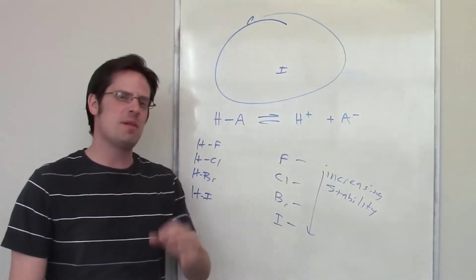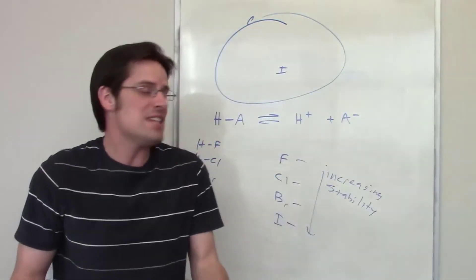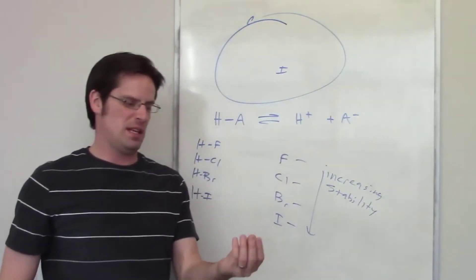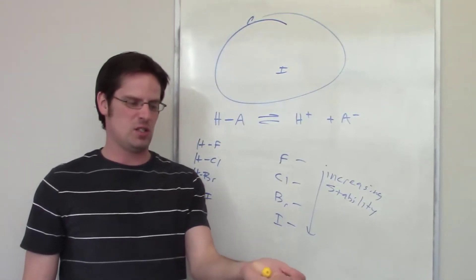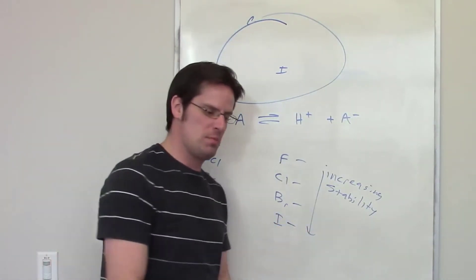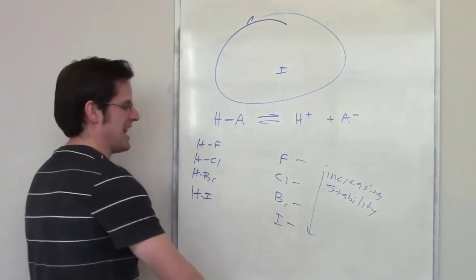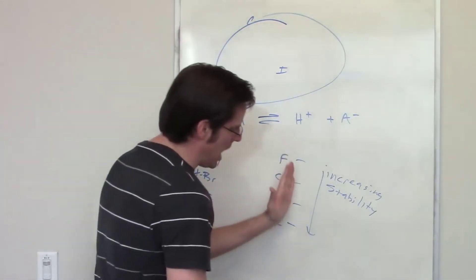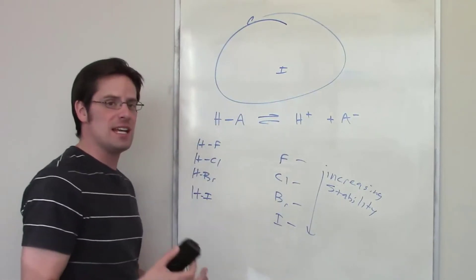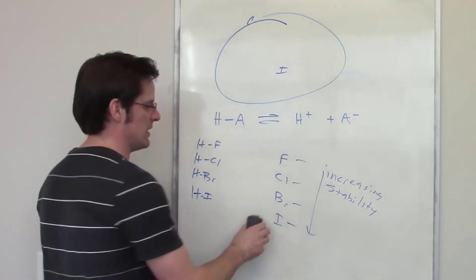F⁻ is very, very small. Compared with our baseball, throwing an extra electron onto fluorine is like smearing it across a tiny sphere. So it's all based on size. As you go down a column on the periodic table, acidity increases — not because of electronegativity, but because of increasing size.